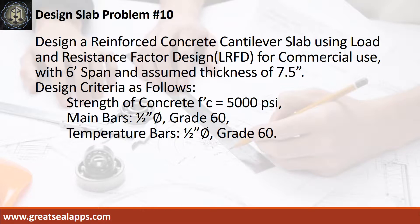Design a reinforced concrete cantilever slab using load and resistance factor design for commercial use, with 6 feet span and assumed thickness of 7.5 inches. Design criteria as follows: strength of concrete 5000 psi, main bars ½ inch diameter grade 60, temperature bars ½ inch diameter grade 60.